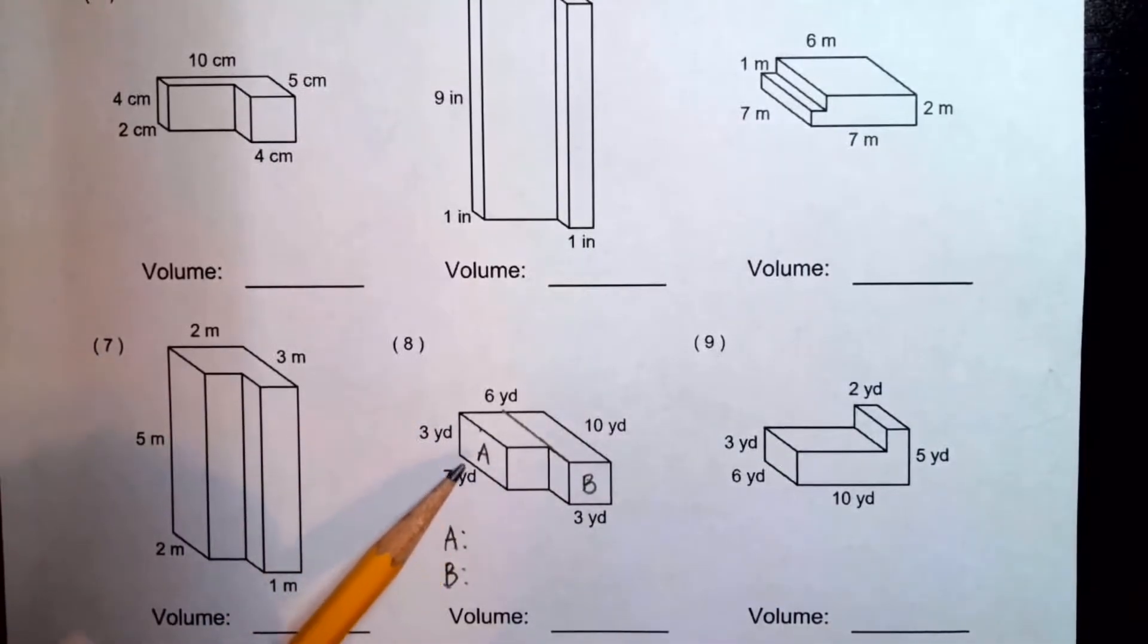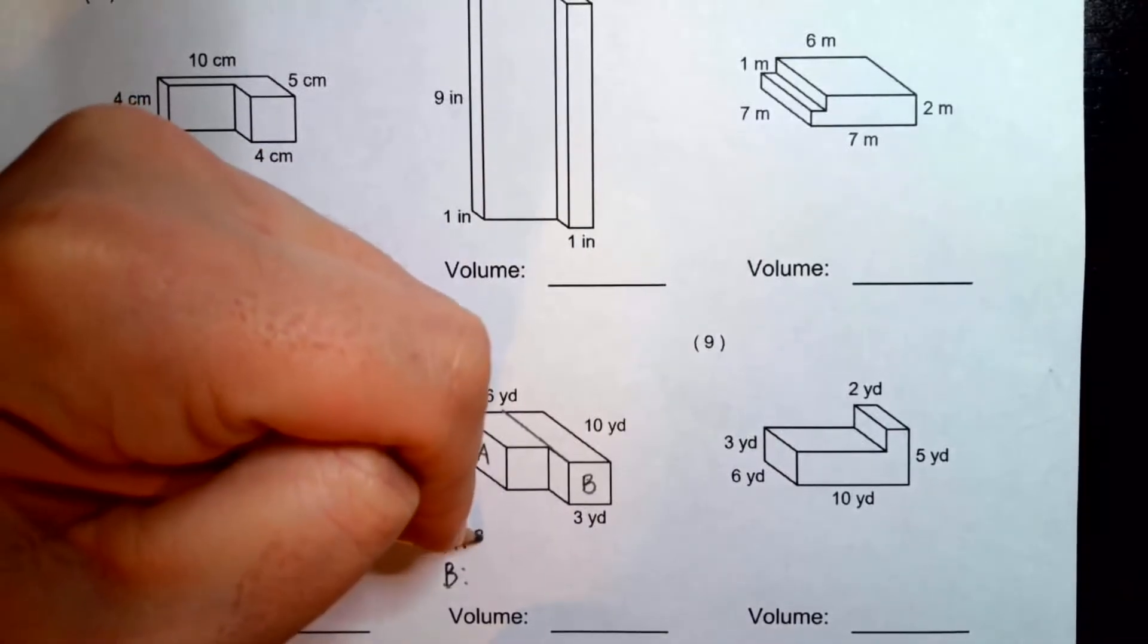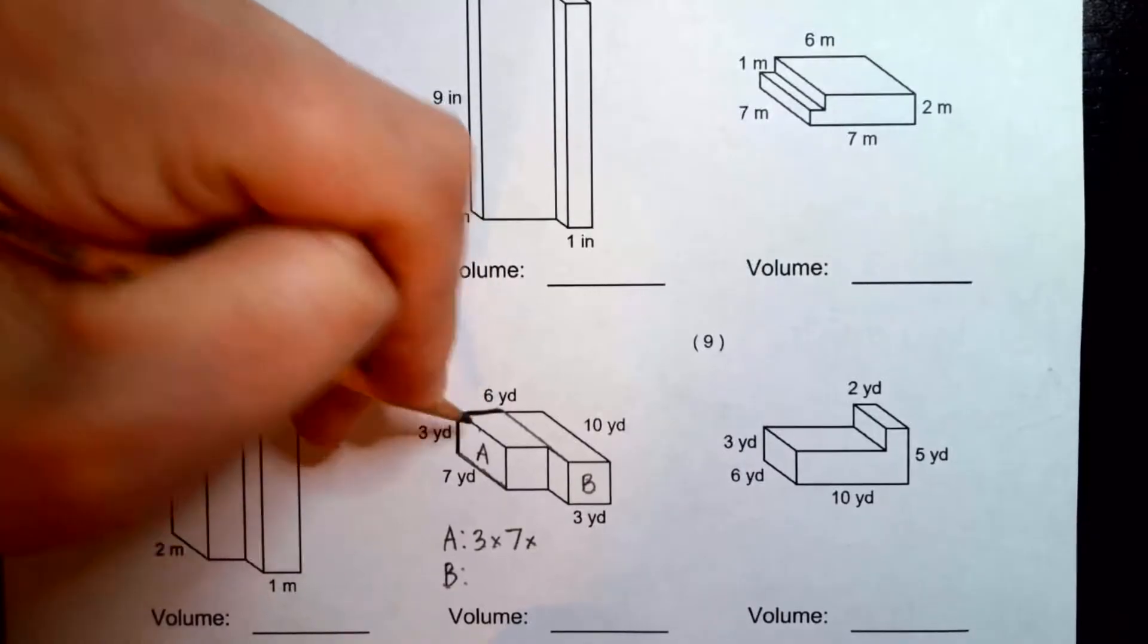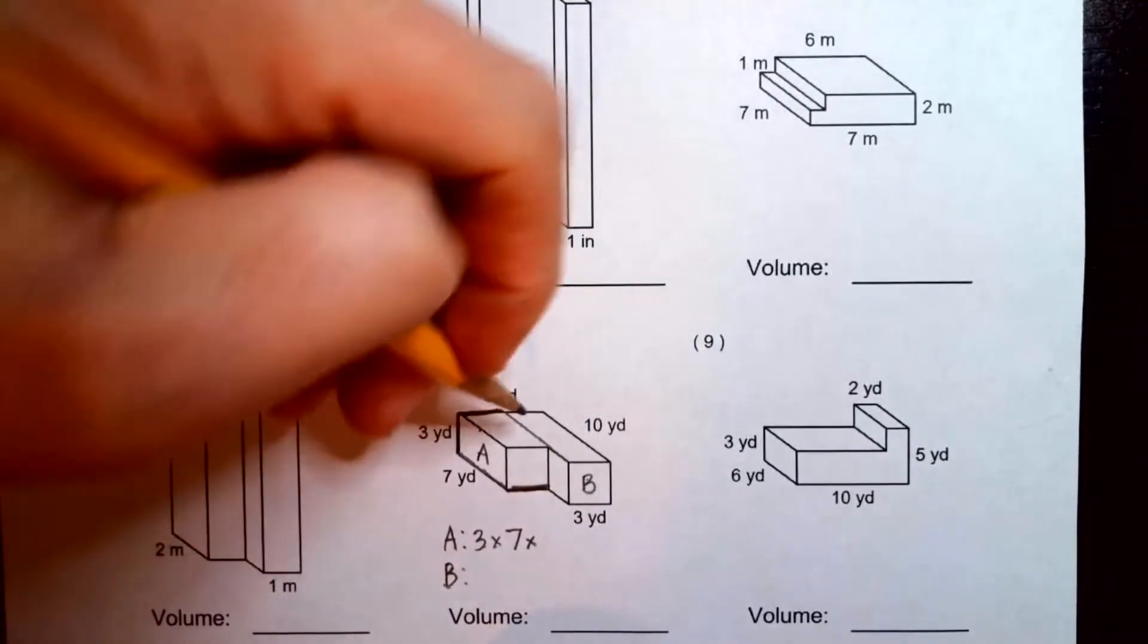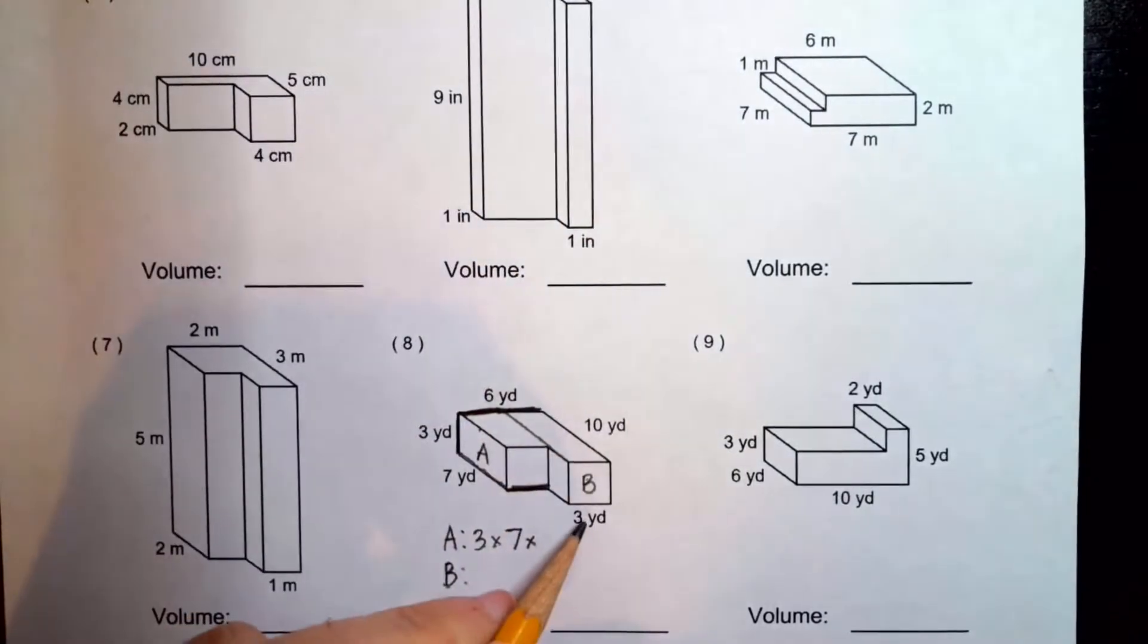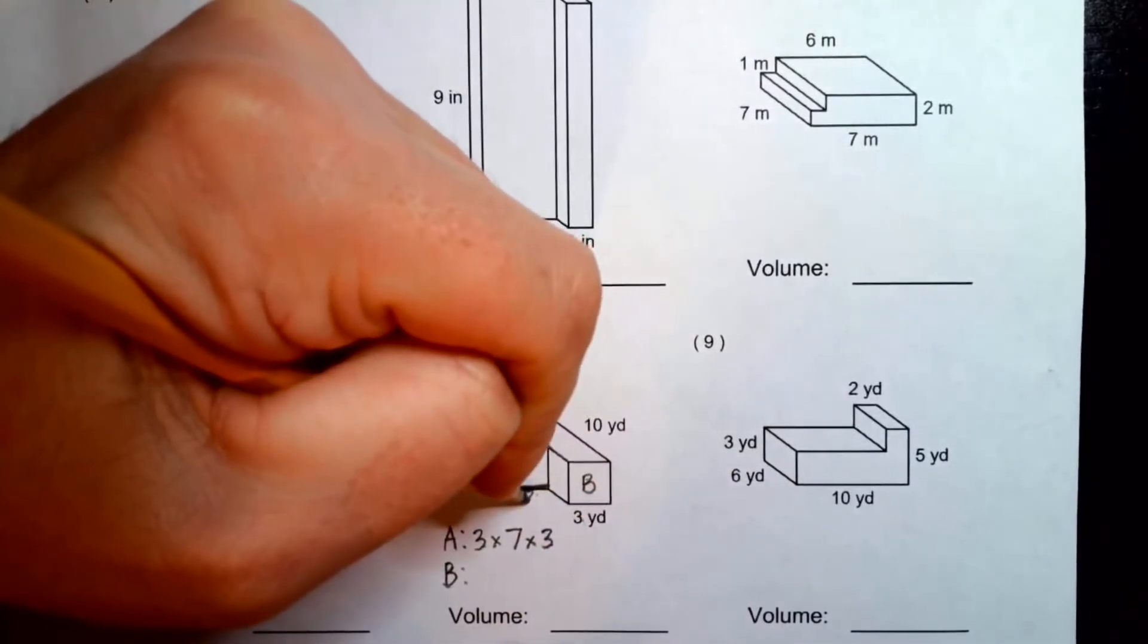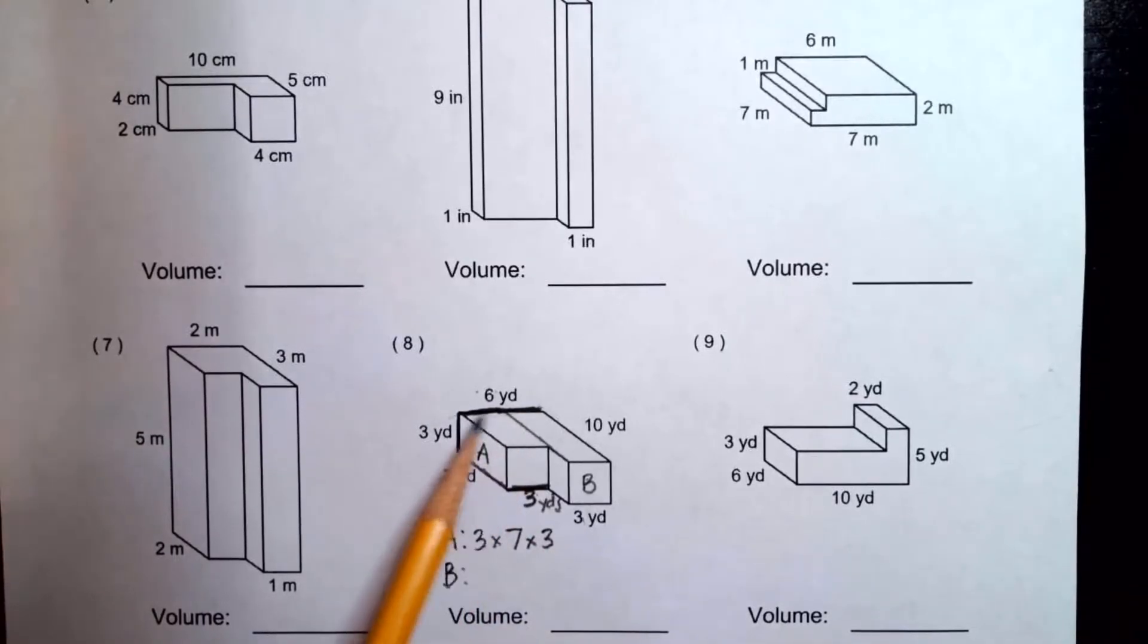We're going to find the volume of prism A and the volume of prism B and add them together, and that will give us the total volume. To get the volume of A, we need to multiply the length, width, and height. Right here, here's our height. So, three. Here is a length of A. It is seven. So, what we need is how long this part is. To figure that out, what we can see is this measurement of A plus B together, the whole thing is six yards, and we can see that B is three yards. If we take this six and subtract the three, that's what will be left, and six minus three is three. That means this measurement is three yards.